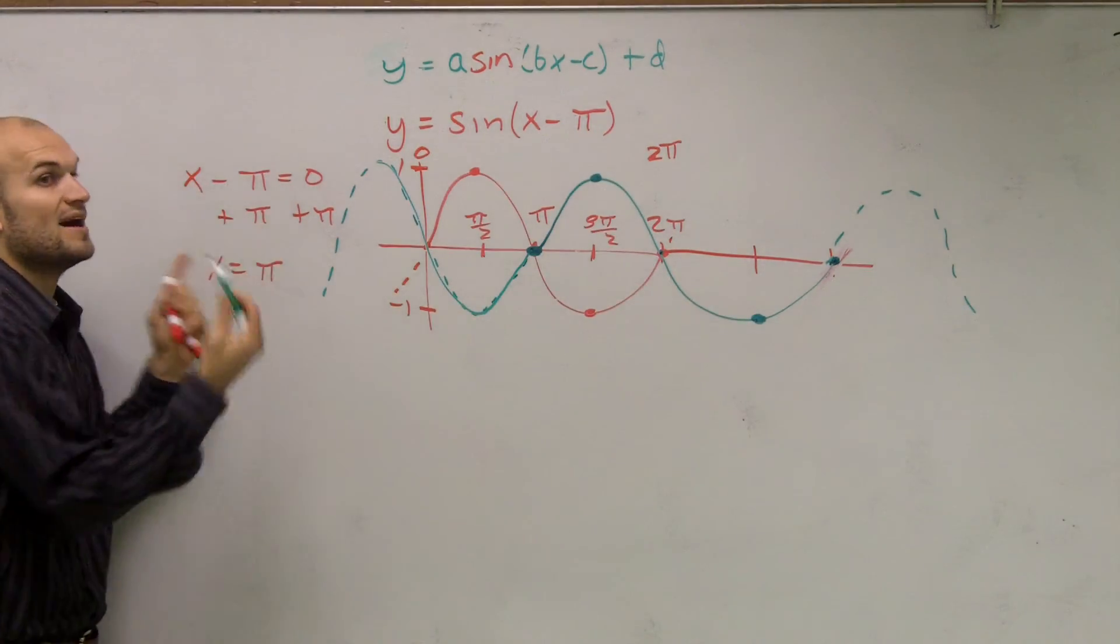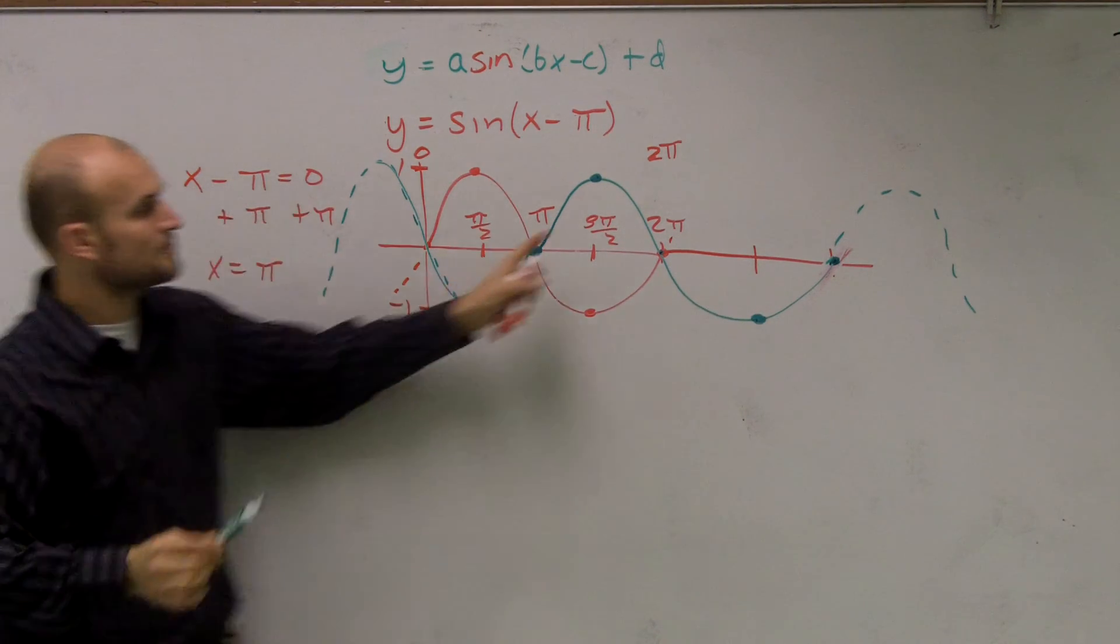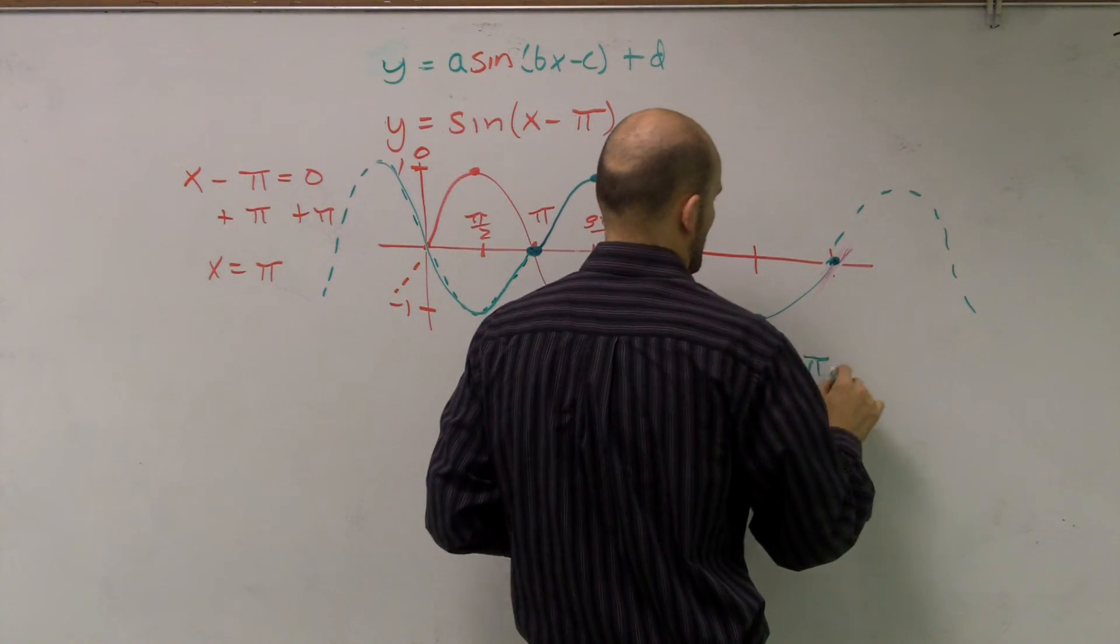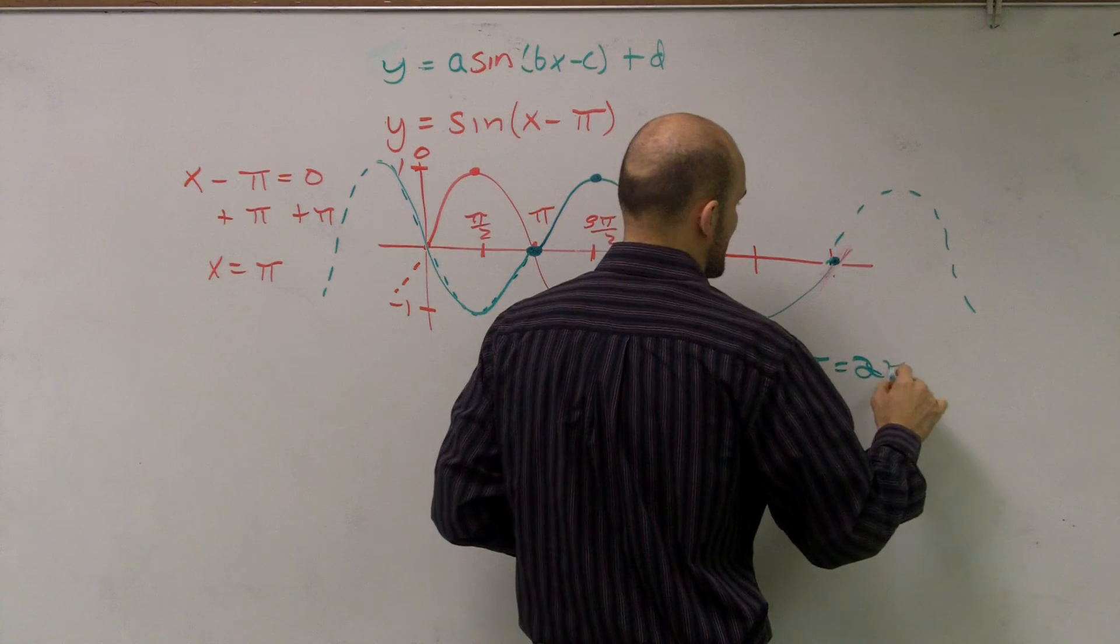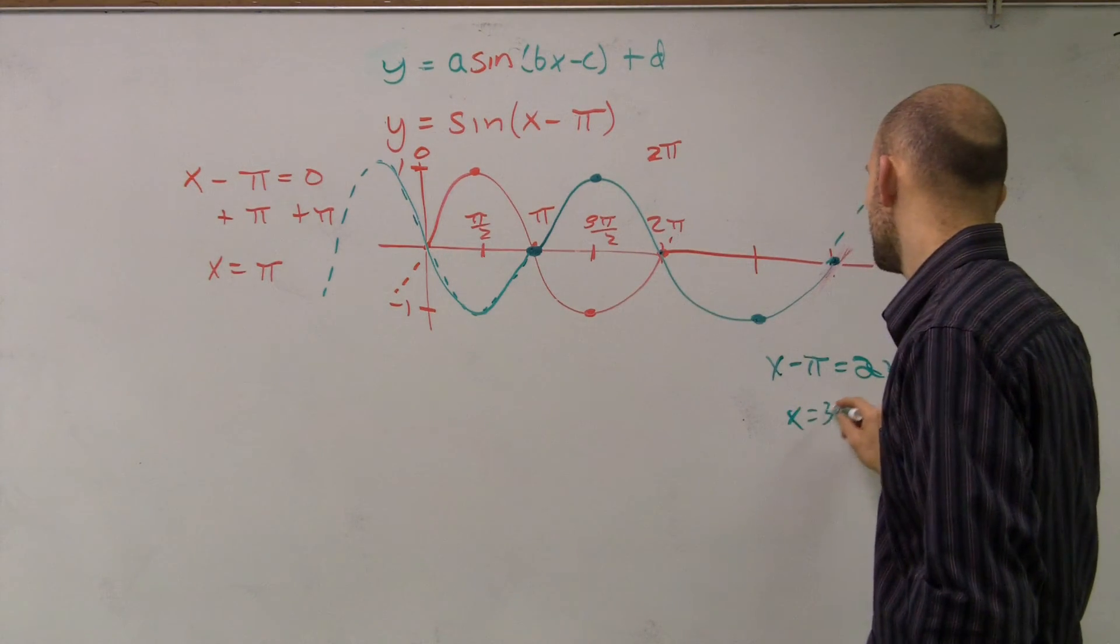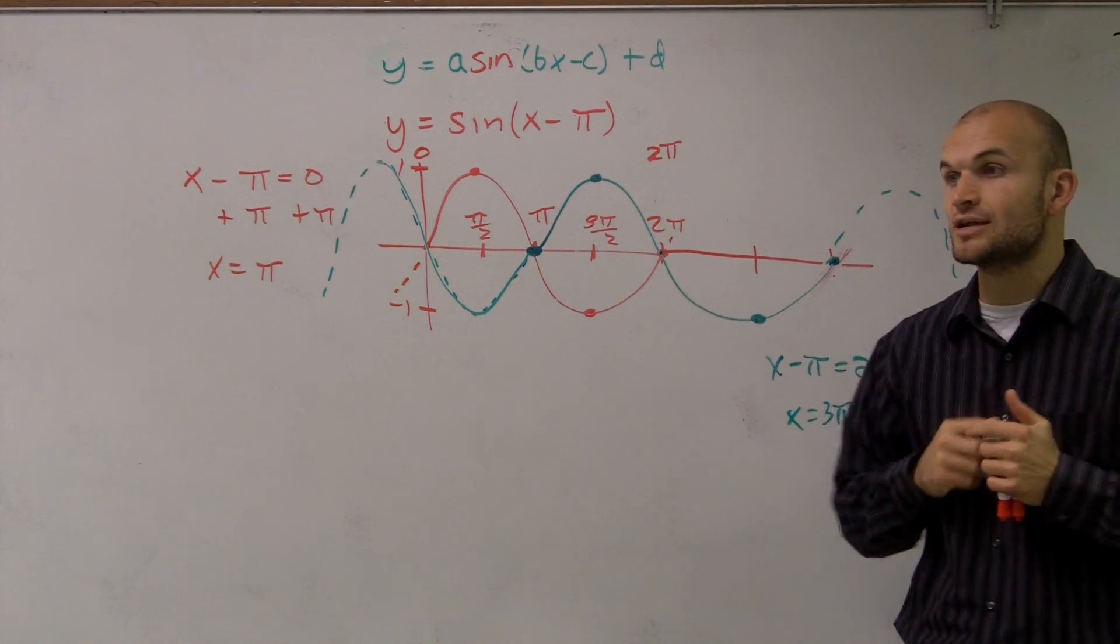However, to find what your end points are for each one, just set whatever's in your function equal to zero and equal to 2π. I'm sorry, equal to 2π. Then you can solve, and you'll find out your two new end points. Okay? And that's your new graph when you have a horizontal translation.